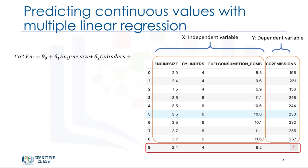And again, as is the case in simple linear regression, if you manage to build such a regression model, you can use it to predict the emission amount of an unknown case, such as record number 9. Generally, the model is of the form y hat equals theta 0 plus theta 1 x 1 plus theta 2 x 2 and so on, up to theta n x n.